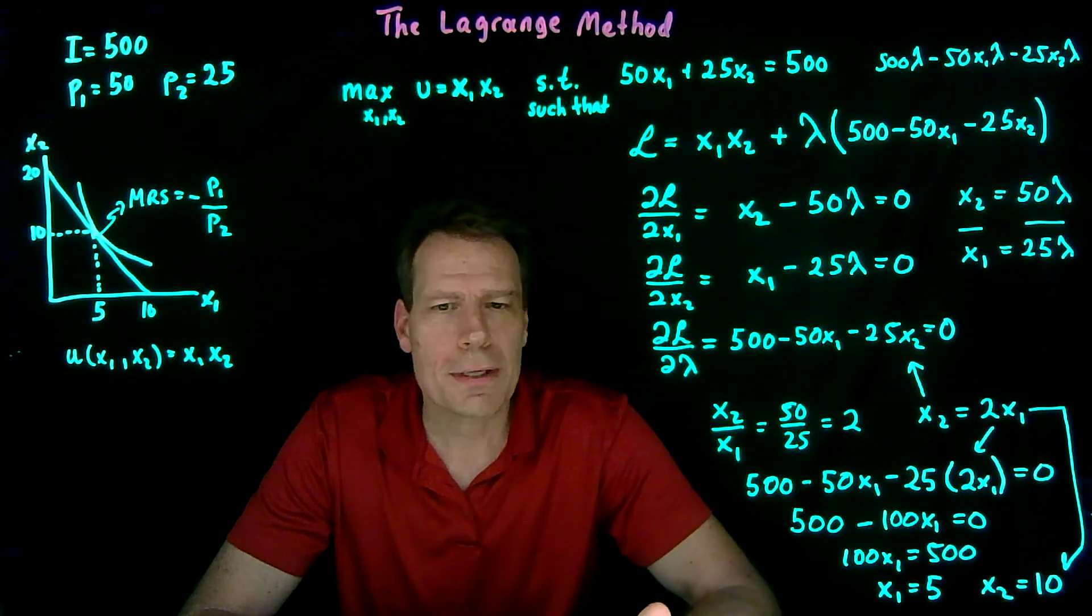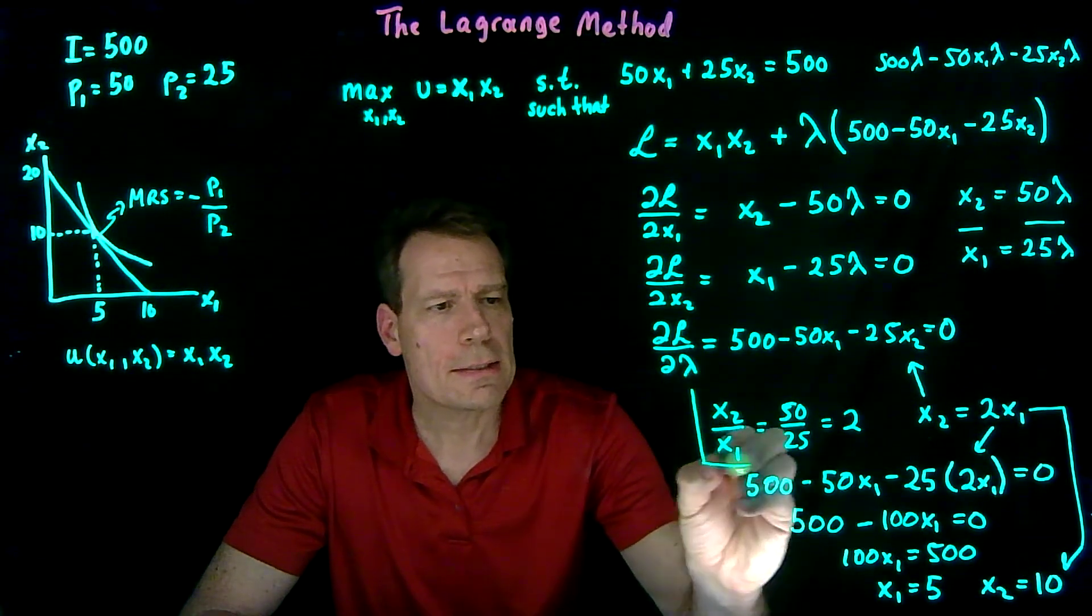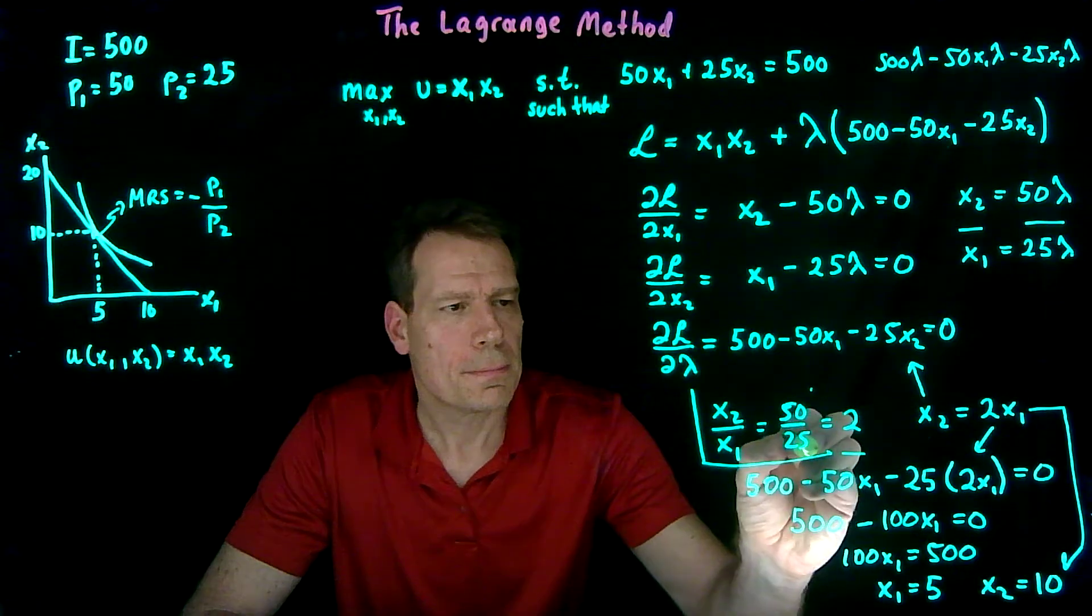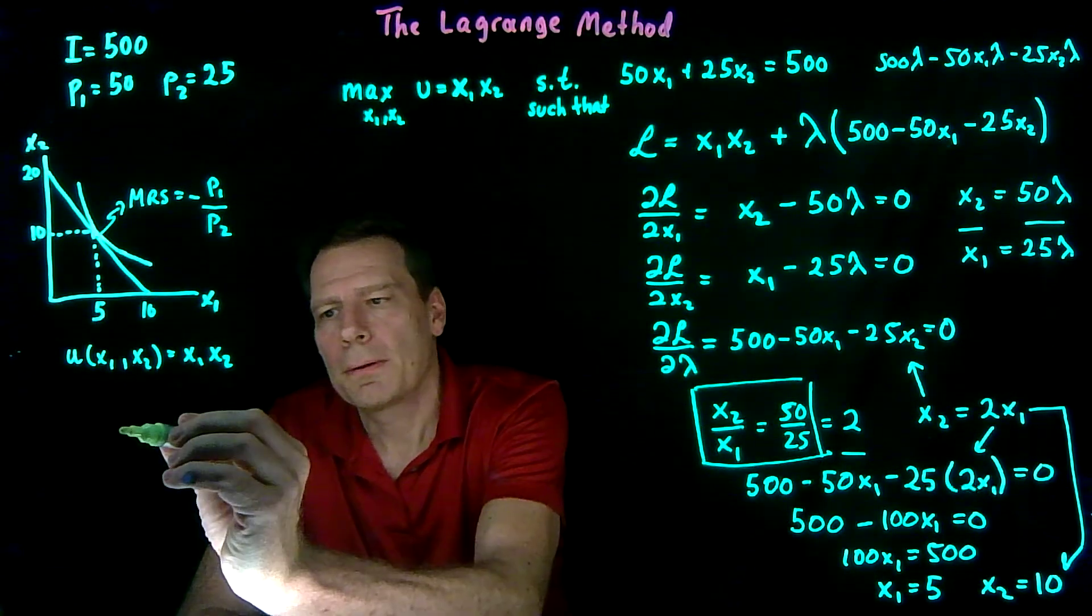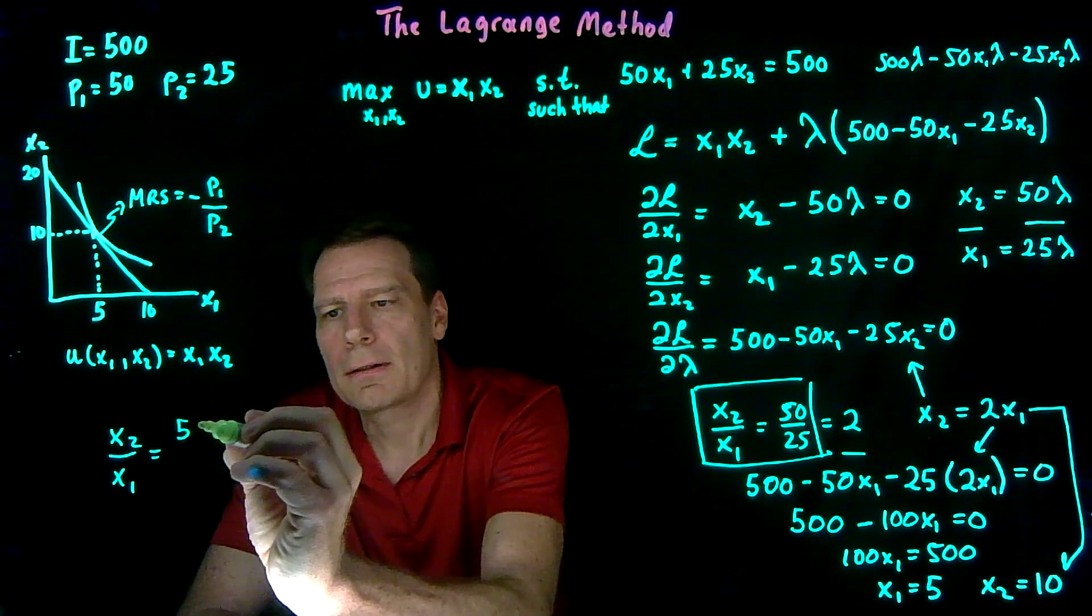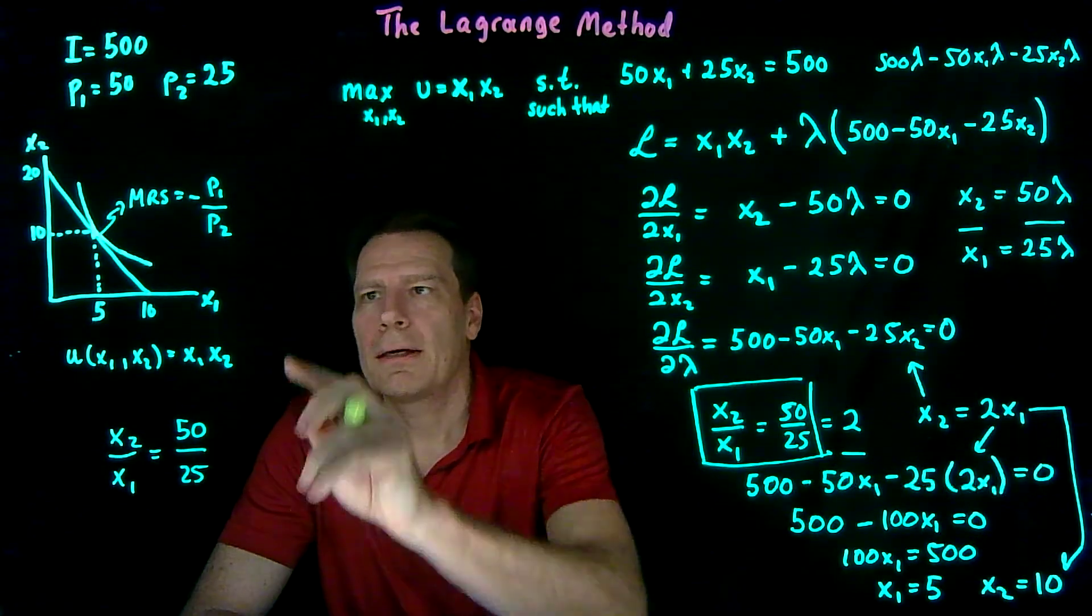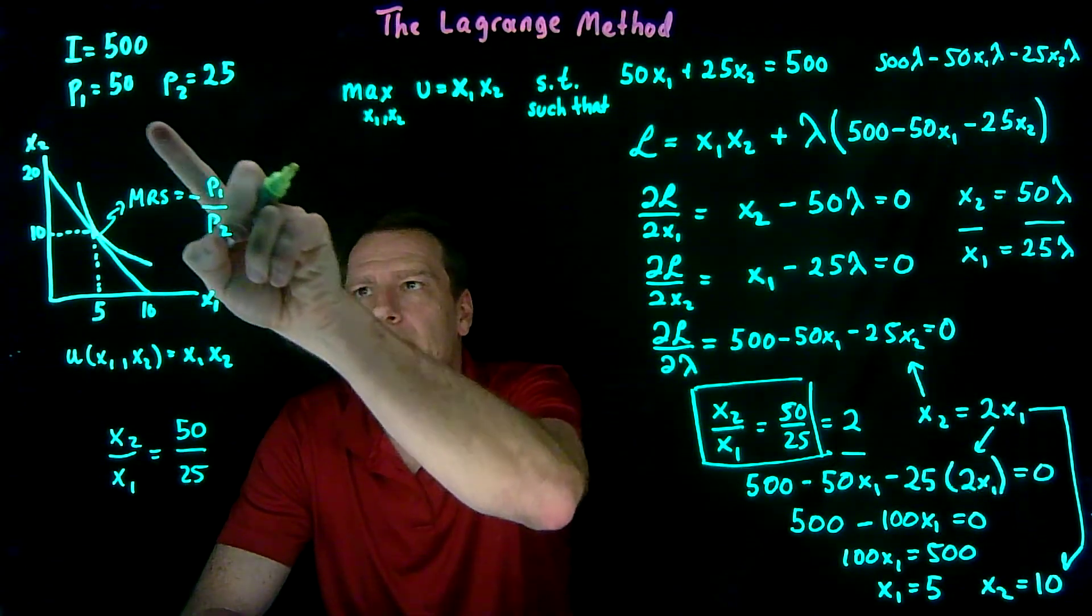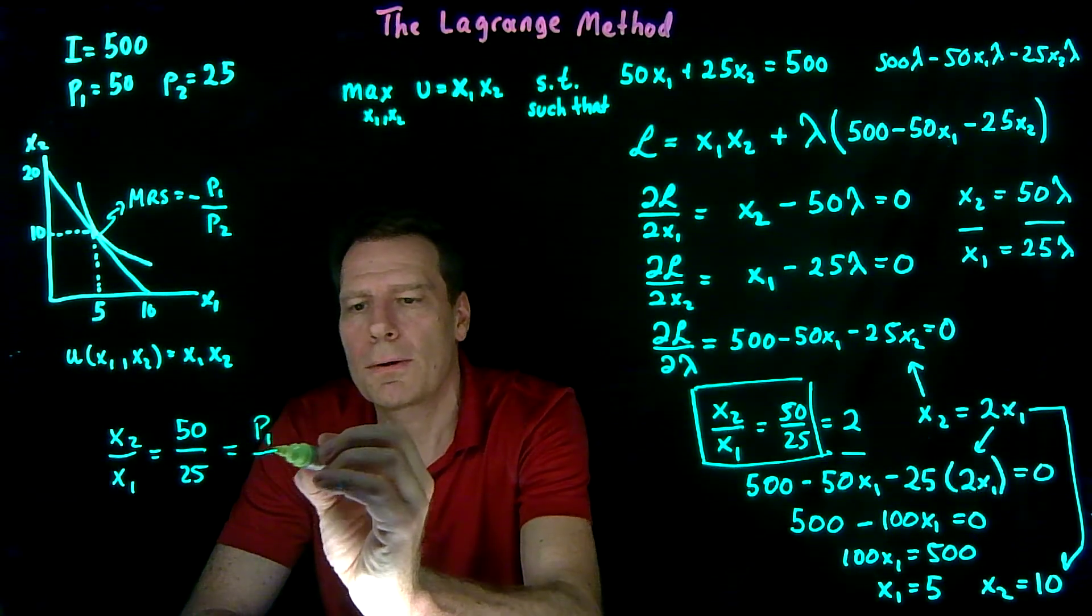Now there's one other thing I'd like to point out. Look at what we got in this step. We got x2 over x1 is equal to 50 divided by 25. 50 divided by 25 is P1 over P2. So that's equal to P1 over P2.